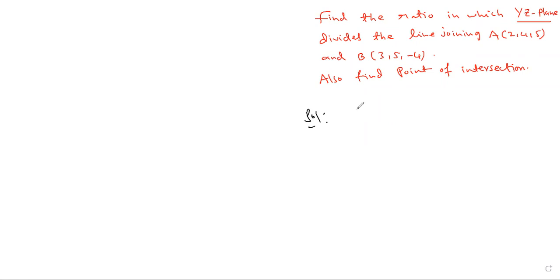The ratio that YZ plane divides AB in the ratio is minus X1 is to X2. The ratio that YZ plane divides AB in the ratio minus X1 is to X2. This is the formula.